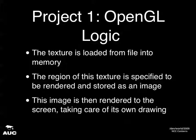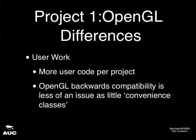OpenGL doesn't have things like a sprite class, so a lot of this code you have to design yourself — there's more user code per project. However, because OpenGL doesn't support those convenience classes used in DirectX, OpenGL is a lot easier to be backwards compatible. DirectX 9, as version 11 is coming out, is a massive beast of redundant code from DirectX 7 that can't be flushed out because past games would break.